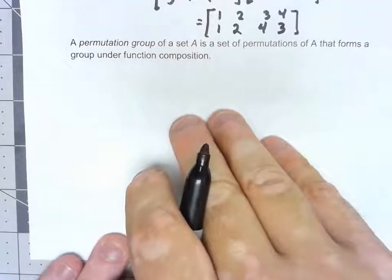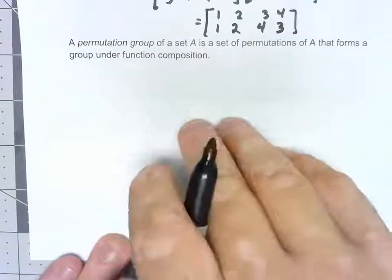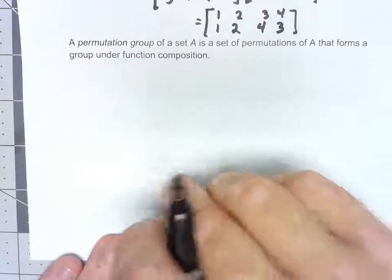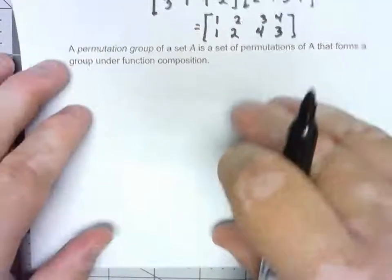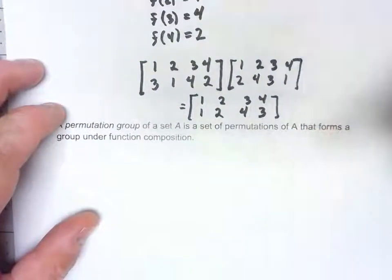Now that we know how these permutations work, a permutation group is quite simply, it's just a set of permutations that is a group under that function composition, under the same kind of multiplication that we just did.